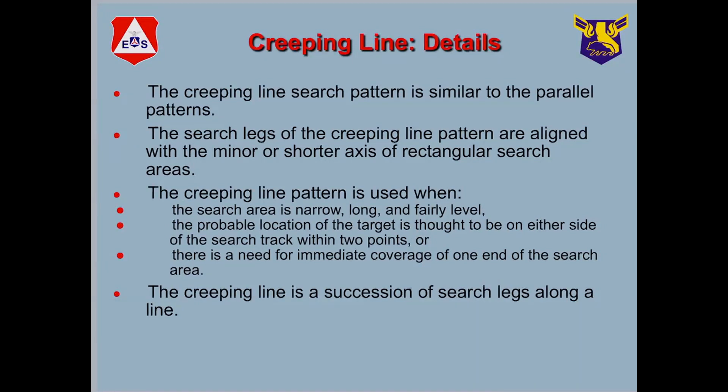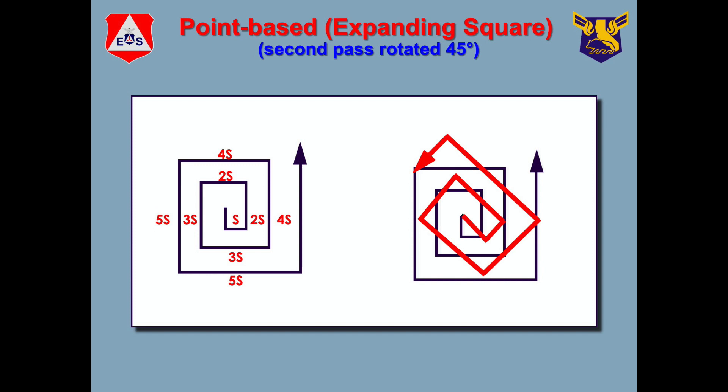Sometimes, rather than concentrating on a certain flight path, we know fairly close to where it is. And when might we know that? We might know that if we're doing an ELT search, electronic locator transmitter. So we can use some equipment in the airplane to figure out where the airplane is, or we might have even gotten coordinates from the PLB. So we have some coordinates, and we want to search for that area. A way to do that is one of these point-based searches called the expanding square.